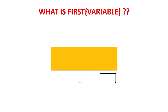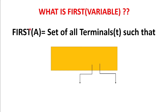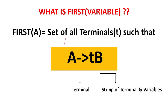Now we have to find FIRST of a variable. FIRST is a function and we always find FIRST of a variable — we never find FIRST of a terminal. Always FIRST of a variable needs to be found. On the left-hand side of the grammar, a variable must always be there. There cannot be a terminal on the left-hand side.